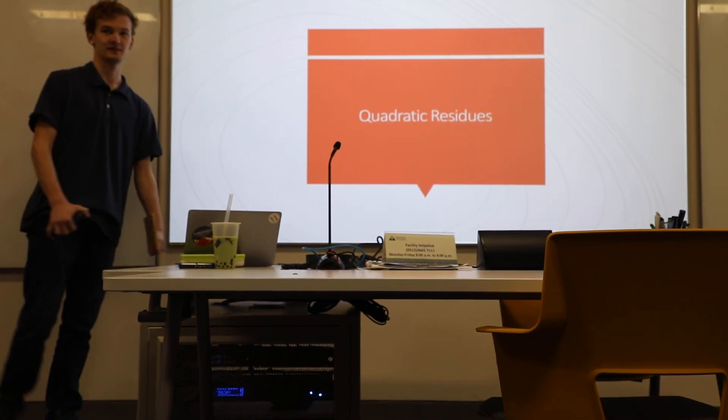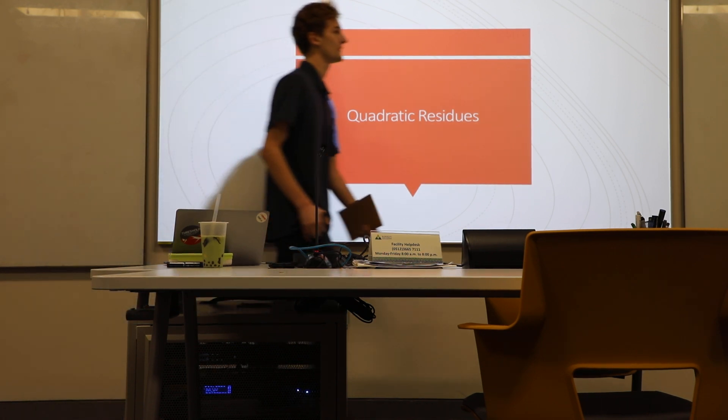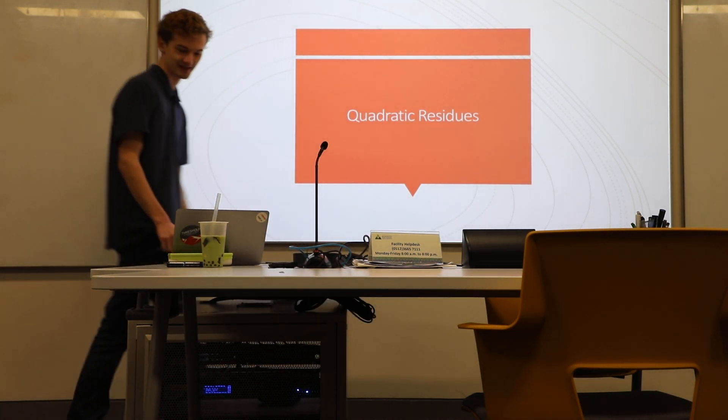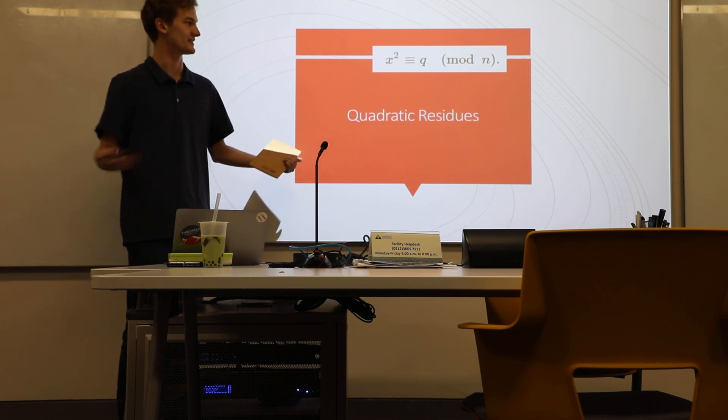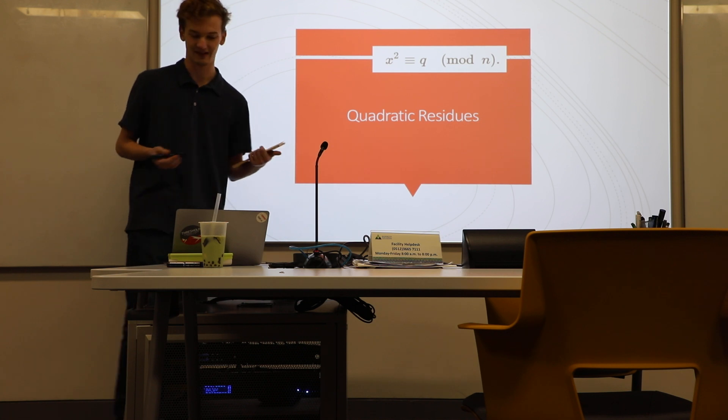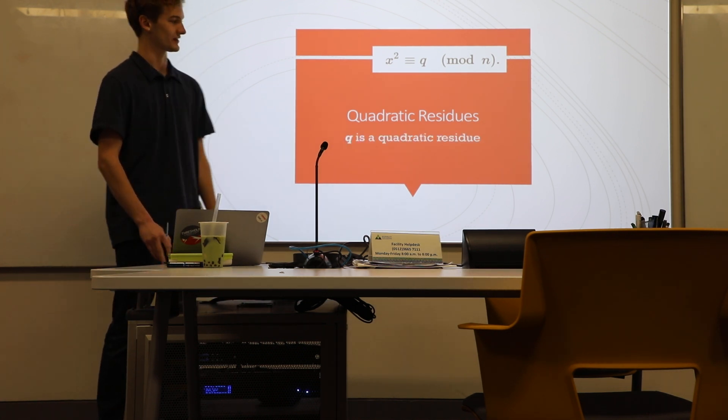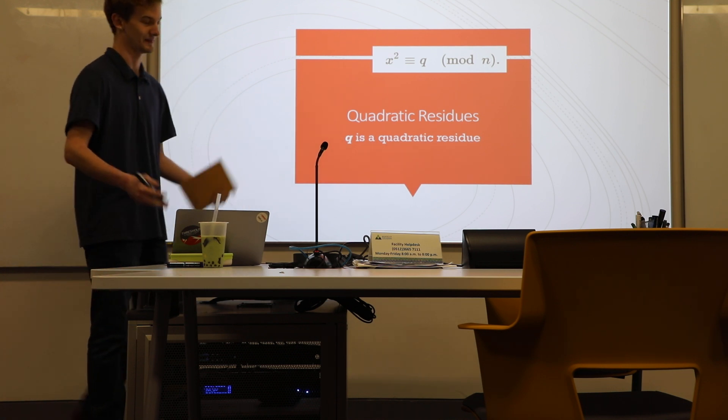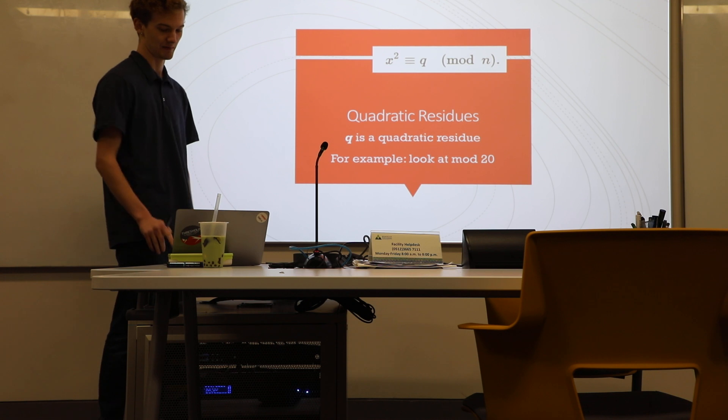The other thing we're going to talk about is something called a quadratic residue. So basically, what you do is you have a number squared that's congruent to something within a modulus. So that's not too hard to understand. And what we call Q is a quadratic residue. That's just the name that we call it. And we can take a look, for example, at mod 20.